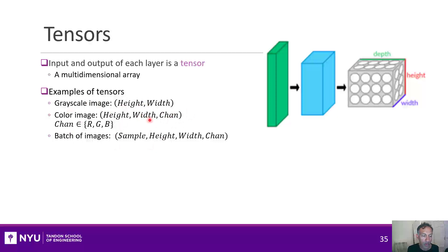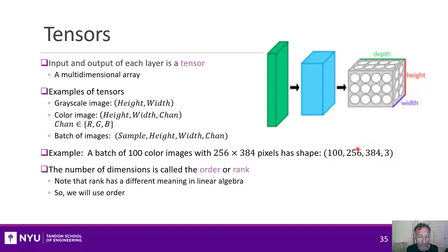Now if you took a batch of images, you would have another index for the sample. So you would have a fourth-dimensional tensor. So, for example, if I had 100 color images of 256 by 384, its shape would be 100 for the sample, 256 by 384 for the size, and three channels. So a four-dimensional tensor.